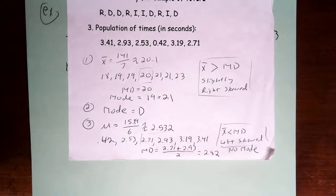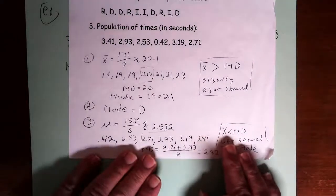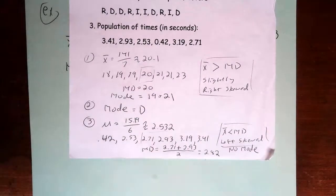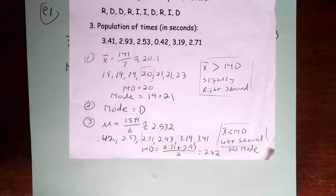And then finally, you can see that the mean is less than the median in this case, and that means that this data set is left skewed.